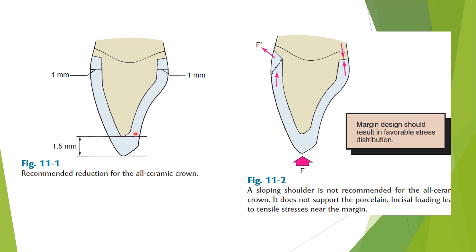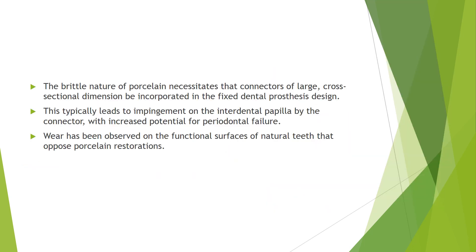In short, the anterior reduction preparation requires 1 mm reduction all around, with a shoulder of 1.5 to 2 mm to be on the safer side. A sloped shoulder at a sloping angle is not recommended — this will cause fracture when forces are applied. The proper shoulder design distributes forces evenly.